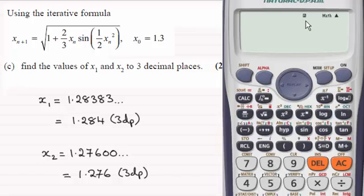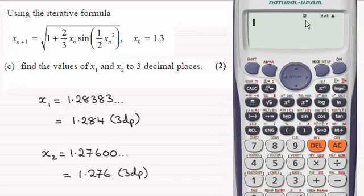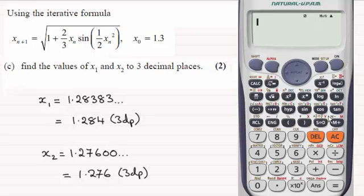So it's in radians mode, and then we enter the first approximation x₀, which is 1.3. Just enter 1.3 and press equals, and this is saved under the answer function.